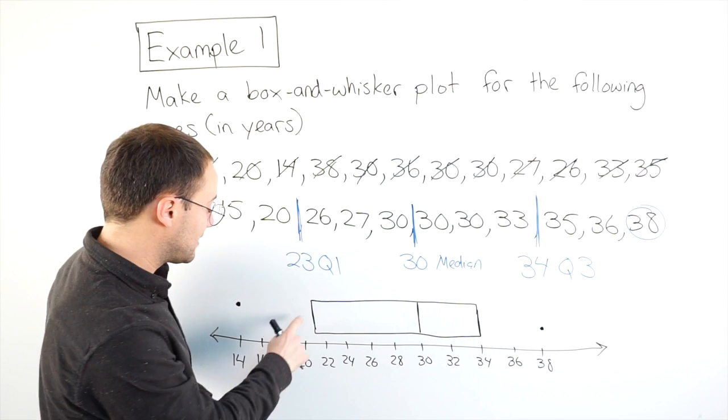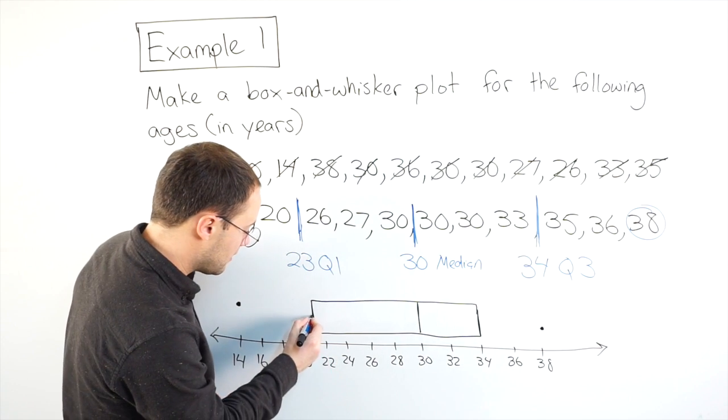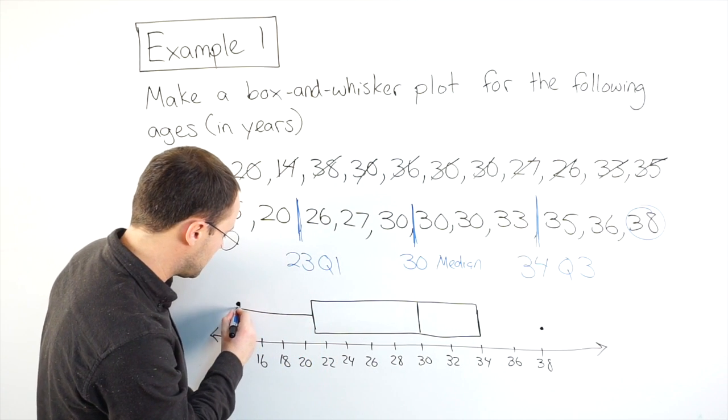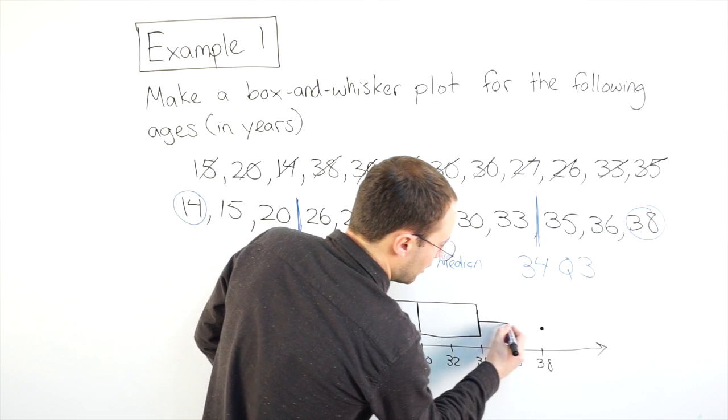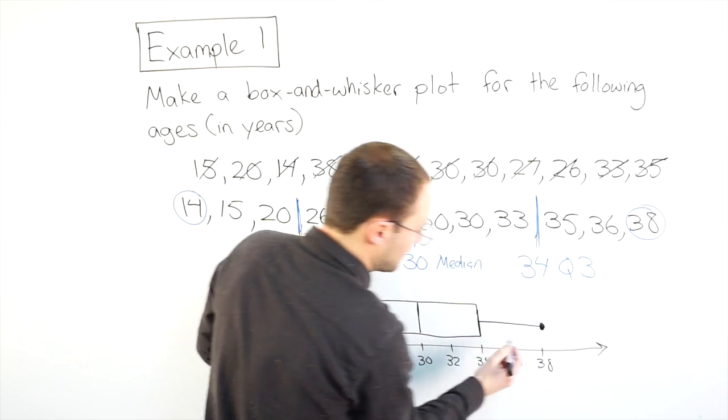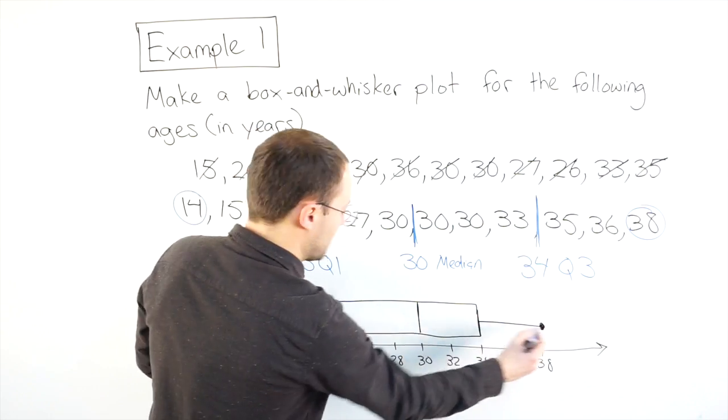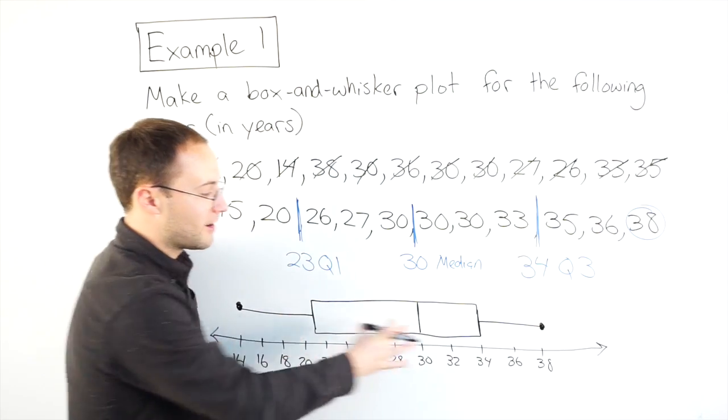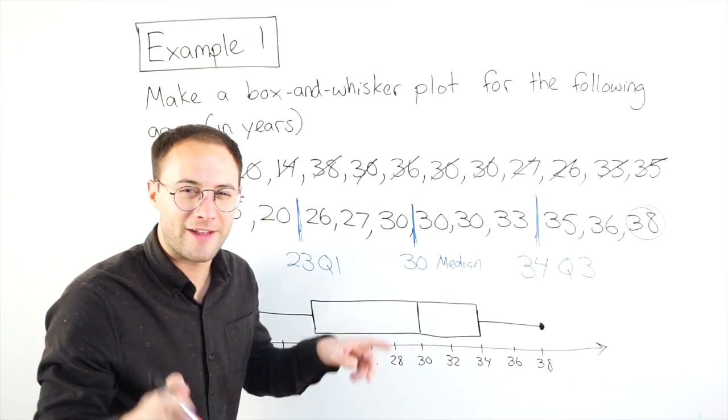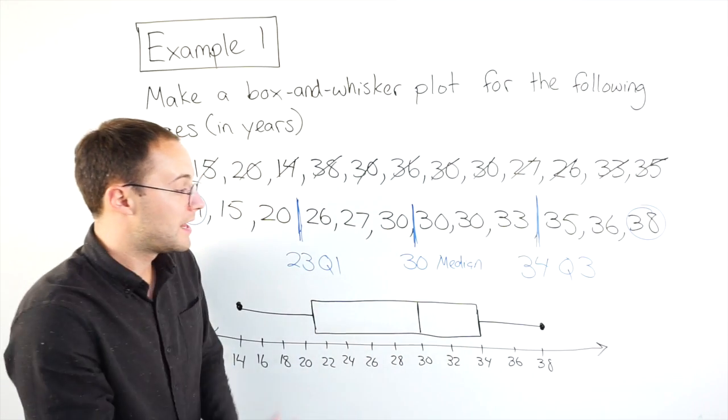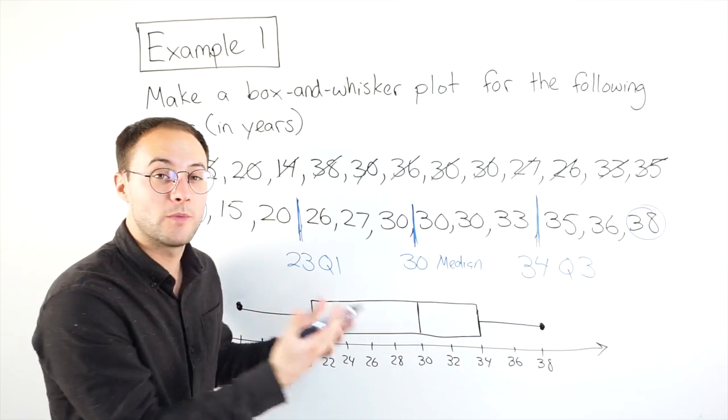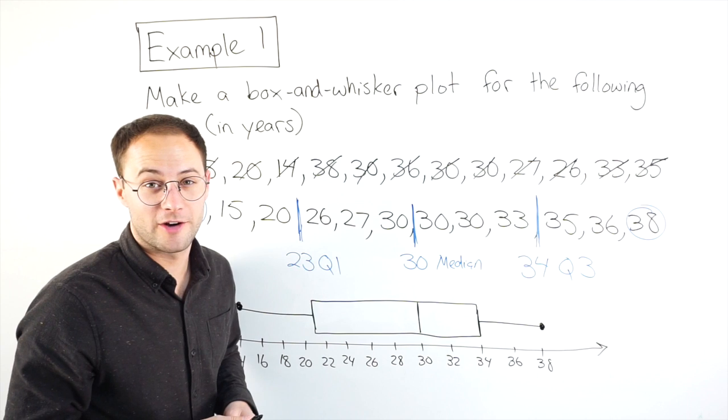Then, you could probably guess, here is where we draw the whiskers. So, just the line coming out from the middle. Not from the bottom, not from the top, just right in the middle. So, these are the whiskers, right? They look kind of like cat whiskers, I guess. And this is the box. And that is your box and whisker plot. Here's one to try on your own.